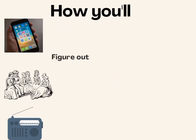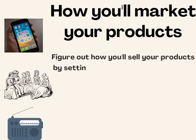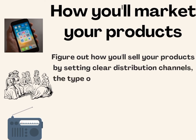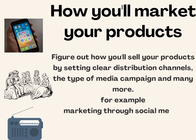How you market your products: figure out the best way to sell your products. This can be done by setting clear distribution channels and the type of media campaign you would go for. For example, marketing through social media, radios, community gatherings, and many other marketing strategies.